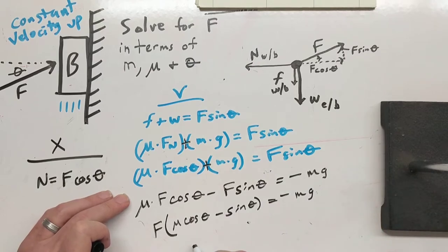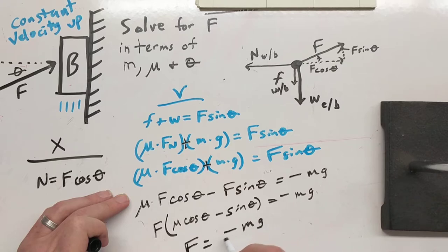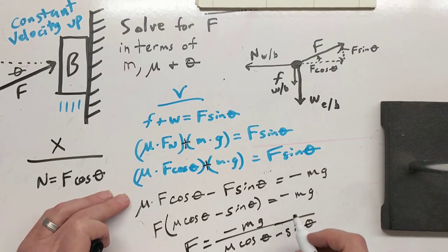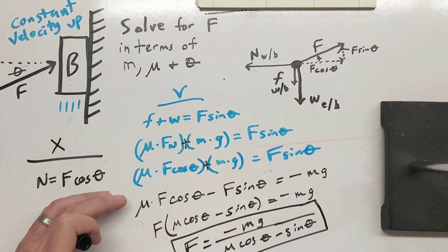So then force is equal to negative mg over mu cosine theta minus sine theta. And that is what you can use to find the force in this type of problem.